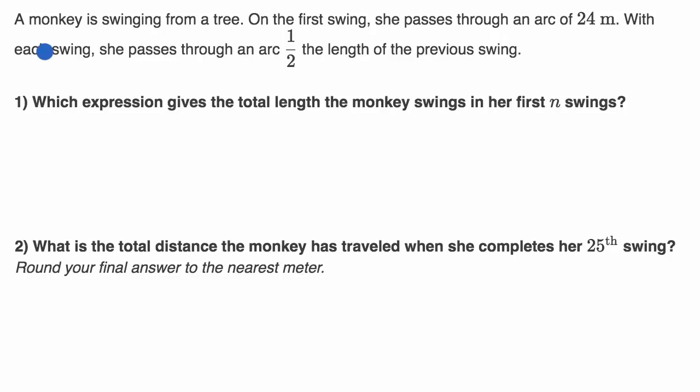We're told a monkey is swinging from a tree. On the first swing, she passes through an arc of 24 meters. With each swing, she passes through an arc one half the length of the previous swing.